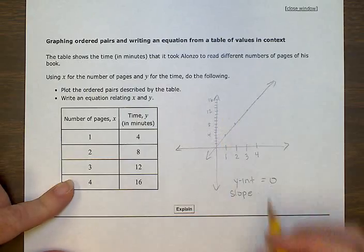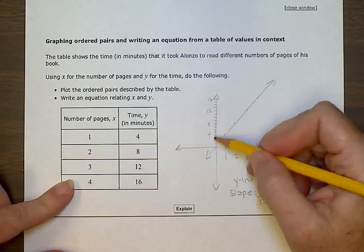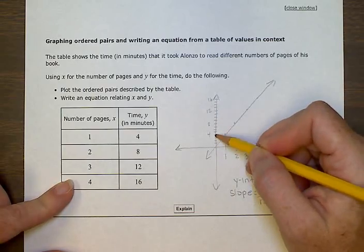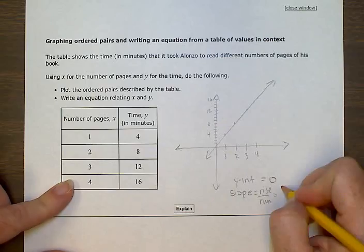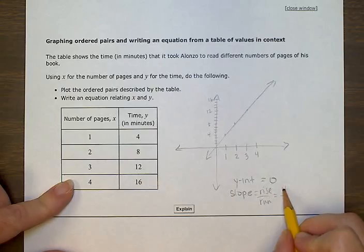So for slope, we do rise over run, how far it went up or down. In this case, we went up 4 and over 1. For every 4 minutes, we read 1 page. So the slope is 4.